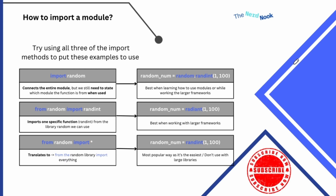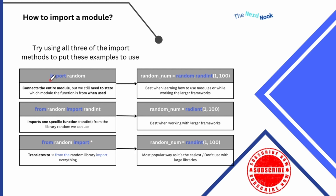When it comes to getting a module into your project, you really have three different ways to do it. At the very top of your code — that's where you do all your imports. The first thing you could do is say import and then the name of your module. That's fine, and this connects the entire module, but you still need to state which module the function is from when you're using a function from that module.